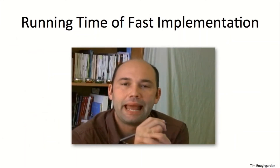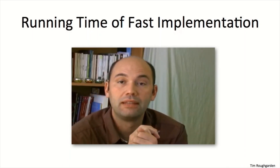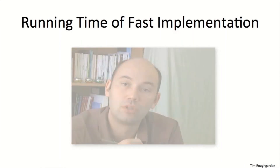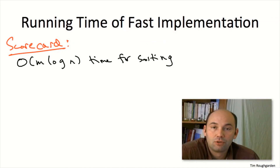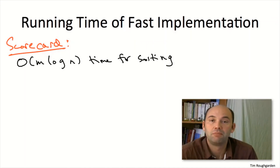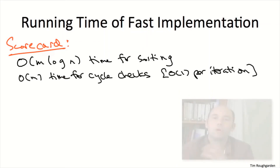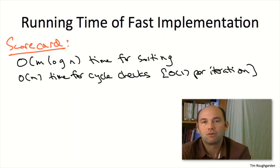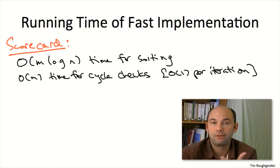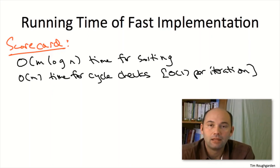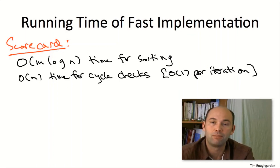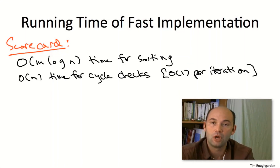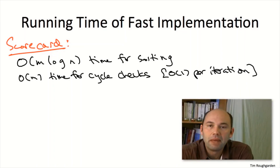In light of that very cool observation, we can now give a good running time analysis of Kruskal's algorithm using the union-find data structure to do cycle checks. We haven't changed the pre-processing step — we still sort the edges from cheapest to most expensive, which still takes O(m log n) time. Beyond sorting, Kruskal's algorithm is just about cycle checks. In each iteration of the for loop, we check if adding a given edge creates a cycle, and the union-find scaffolding lets us do that in constant time by comparing leader pointers of the edge's endpoints.